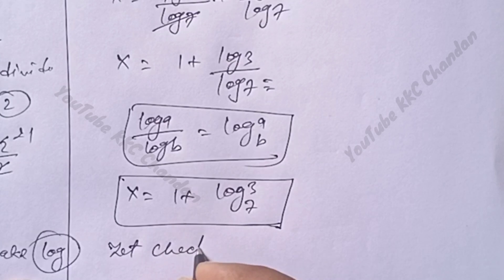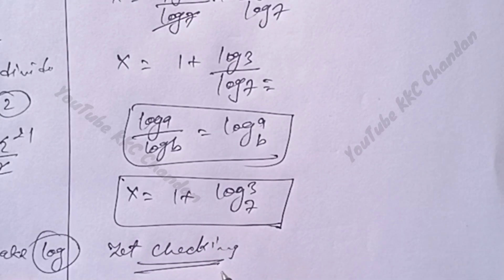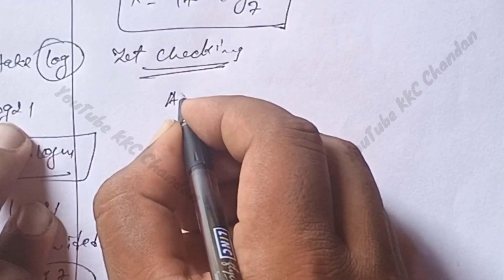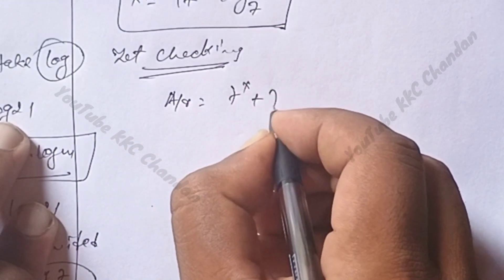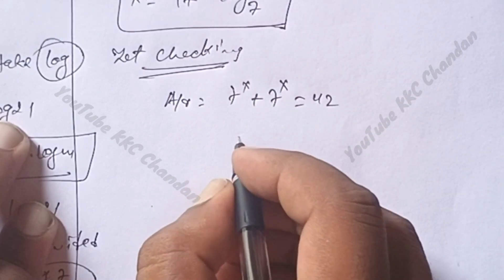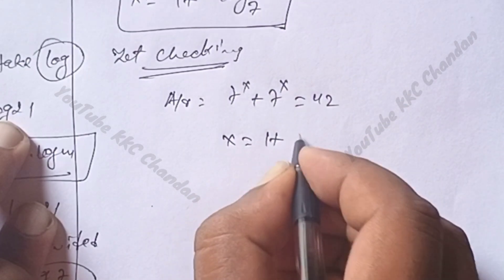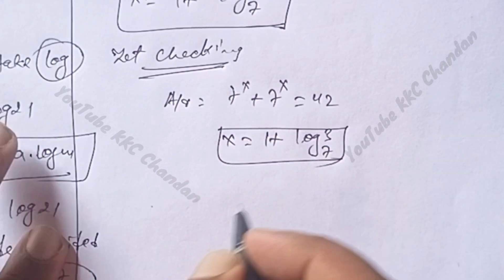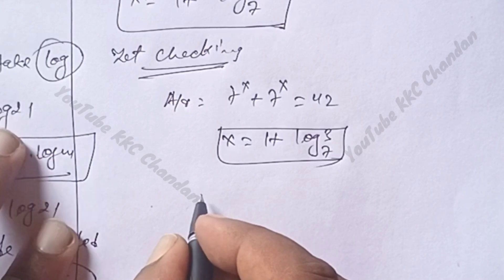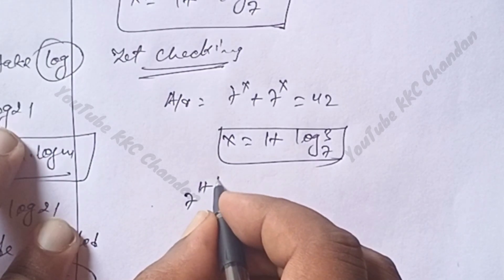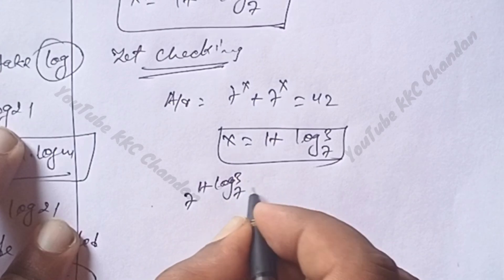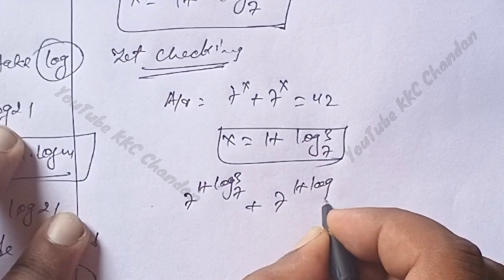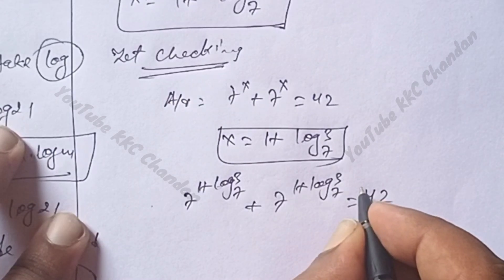Let's check whether this answer is correct. According to the question, 7 power x plus 7 power x equals 42. Substituting x equals 1 plus log base 7 of 3, we get 7 power (1 plus log base 7 of 3) plus 7 power (1 plus log base 7 of 3) — let's verify this equals 42.